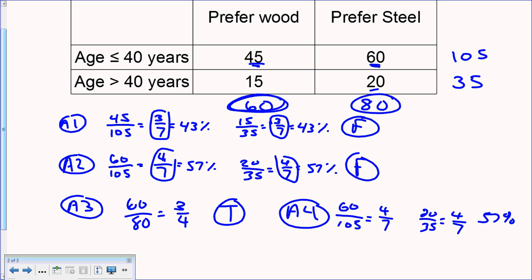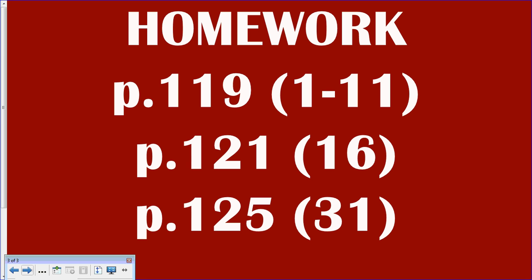Question A5: are older riders more likely than younger riders to prefer wooden frames? We already did that work — 45 out of 105 for younger riders is 43%, and 15 out of 35 for older riders is also 43%. They're about equal, so no, older riders aren't more likely to prefer wood. That's how we use these tables to interpret data. The homework assignment for tonight is shown on screen — pause the video to write it down.